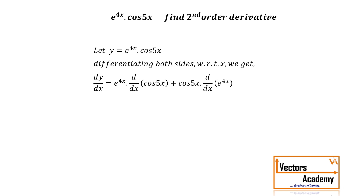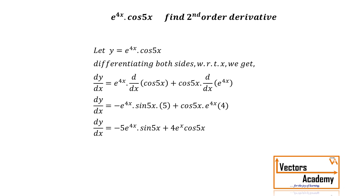Now it is e raised to 4x — derivative of cos is minus sin φx, into derivative of φx which is φ. In the same way, applying the chain rule on the next term: cos φx into derivative of e raised to 4x is e raised to 4x into derivative of 4x, which is 4. Hence simplifying, we get the first order derivative.